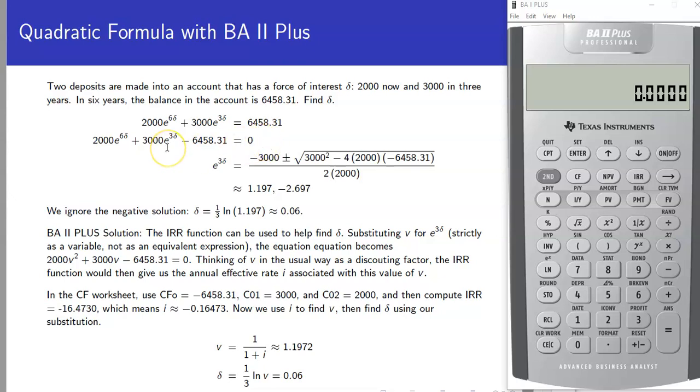The totality of the accumulations here has to be $6,458.31. So using our standard techniques of solving this, we would move the $6,458 over to the left-hand side, set it equal to zero, use e to the 3 delta as our variable, use quadratic formula. We see two roots here. Obviously, the negative one doesn't make any sense for us since things are accumulating. So we're going to ignore the negative solution and then we can solve for delta and get 0.06.